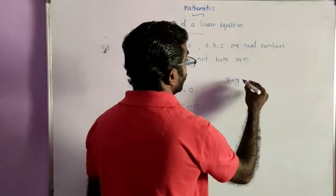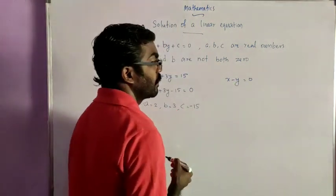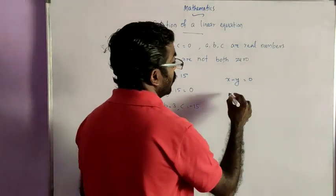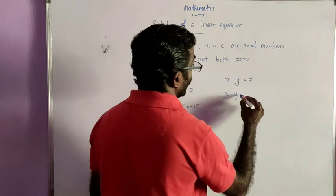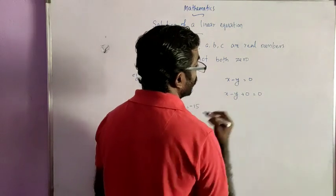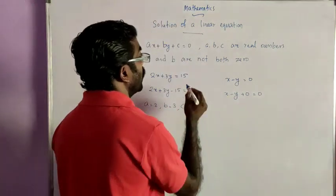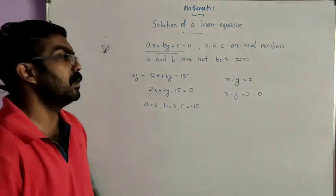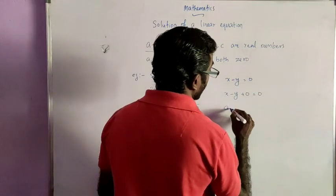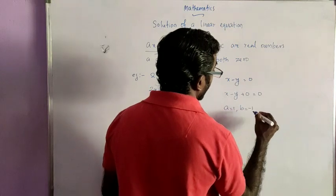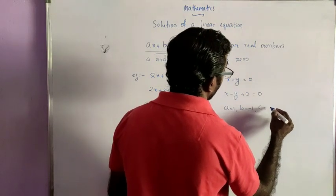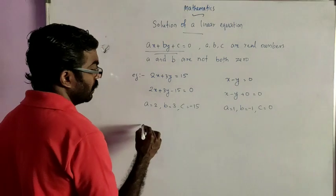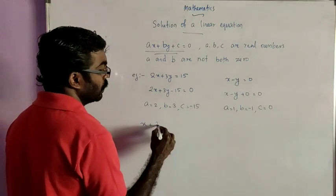Consider another example: x minus y is equal to 0. Here there is no constant term, so we can write x minus y plus 0 is equal to 0. Now we can compare it to the standard form ax plus by plus c is equal to 0. Here a is equal to 1, b is equal to minus 1, and c is equal to 0.